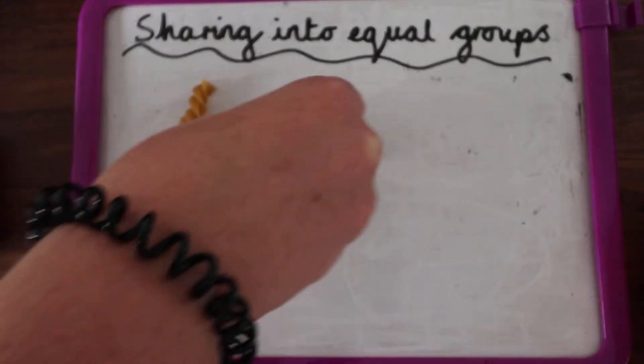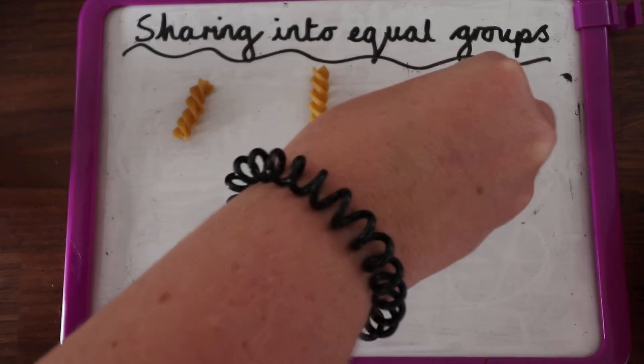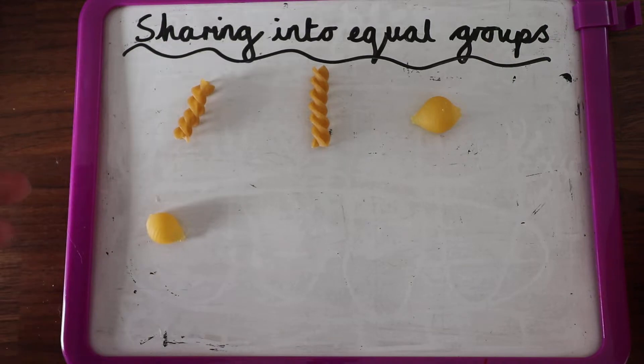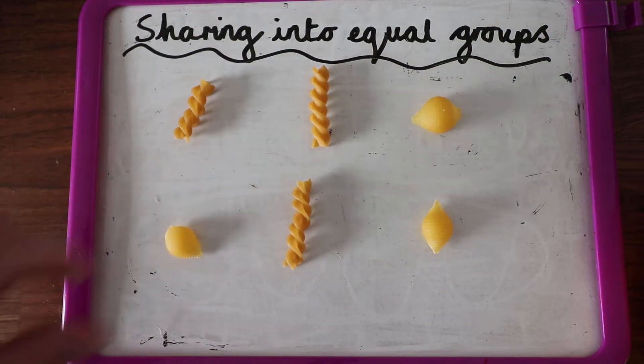So I'm going to make an array. I've got my pasta. So that's my array. What is my array? Have a look at your adult. What does my array represent?